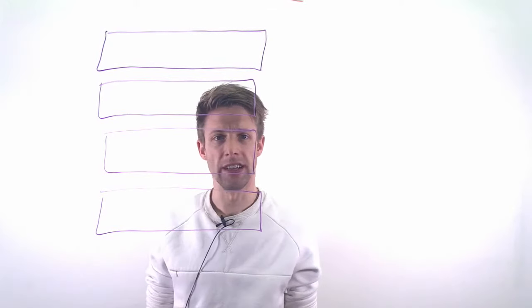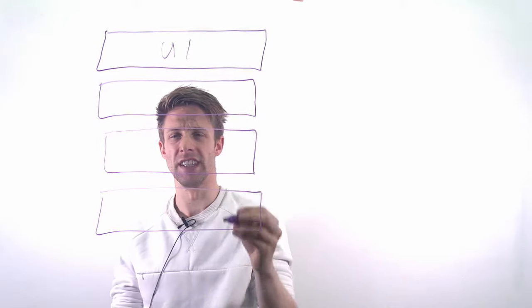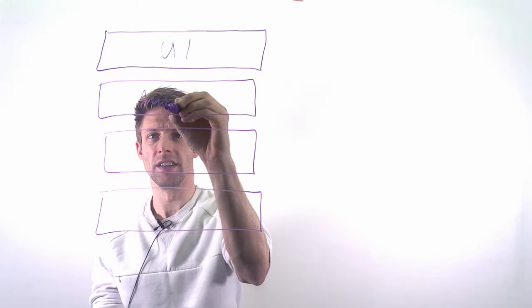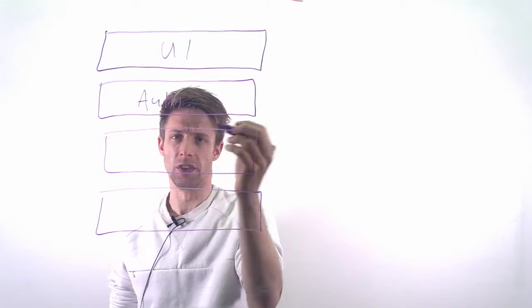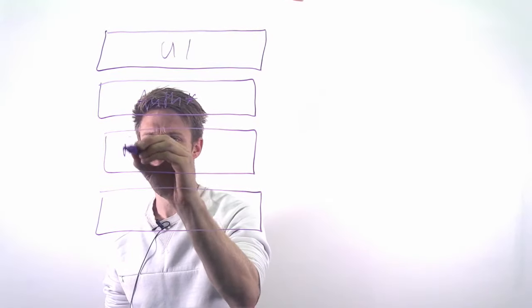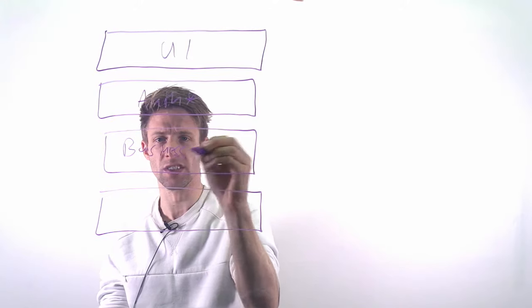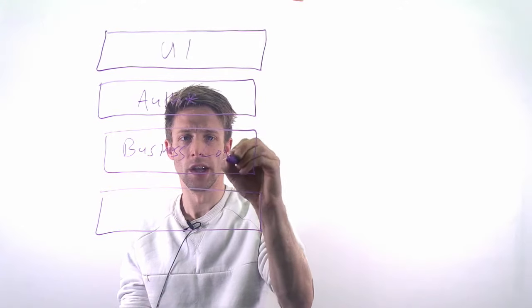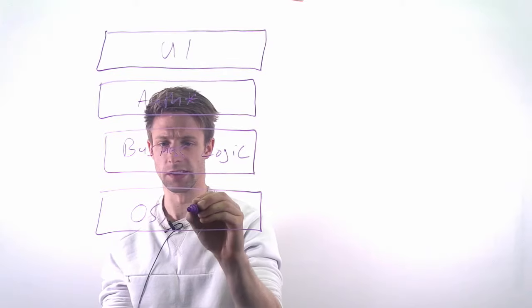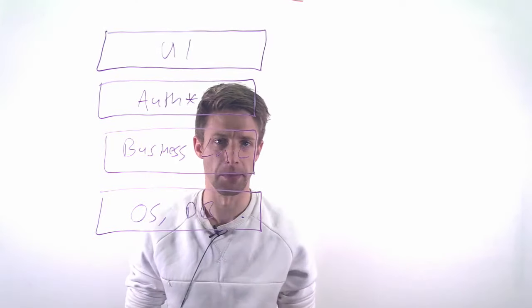Typical layers we might have are, for example, the user interface, an authentication and authorization layer, a business logic layer with the actual functions that do something, and the operating system, database, or other things at the bottom.